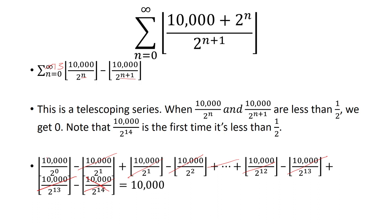So what is left is 10,000 over 2 to the 0. Well, 2 to the 0 is just 1. 10,000 over 1 is 10,000. And the floor of 10,000 is 10,000. So that is our answer.